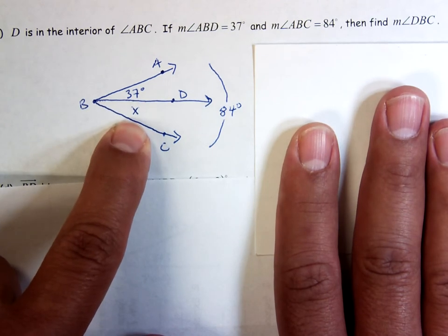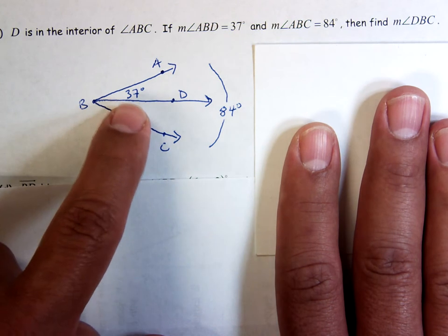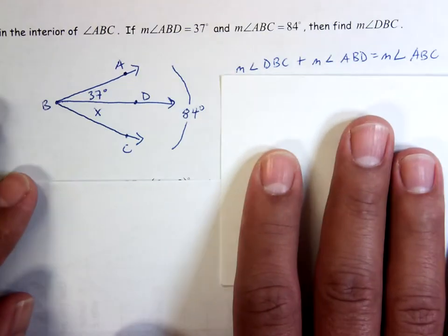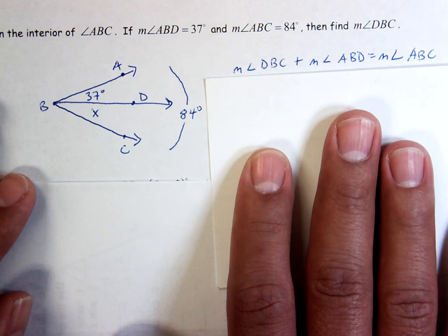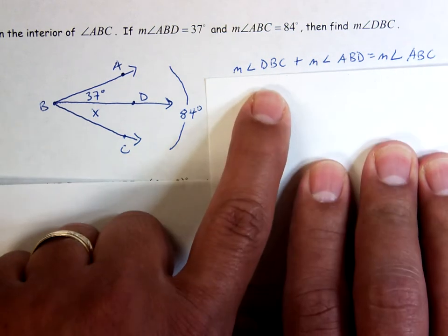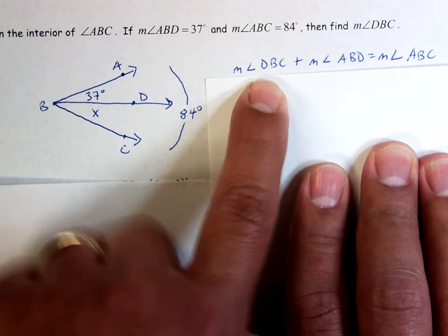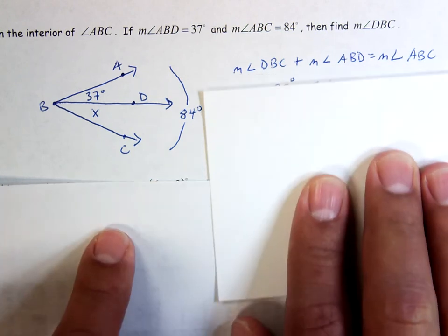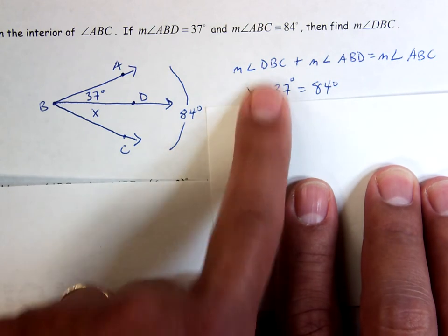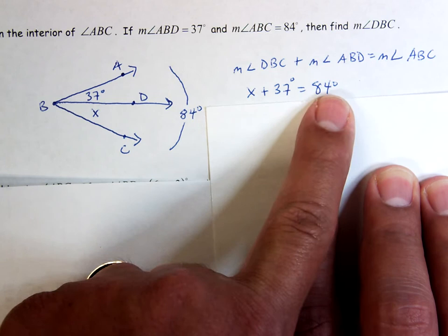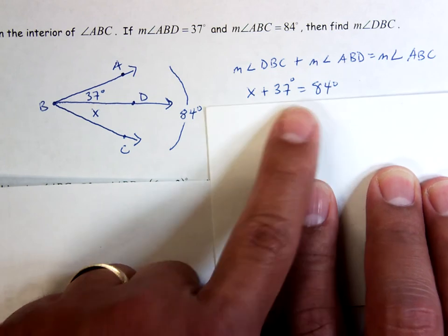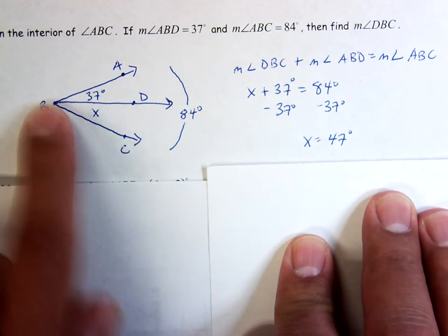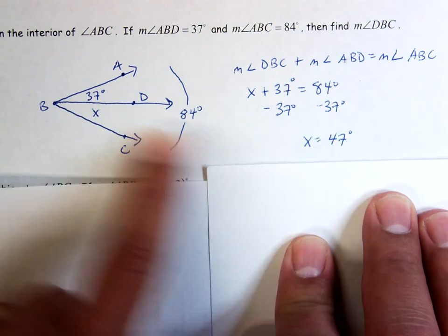Then find the measure of angle DBC, so they want this one. Now remember on that last page, according to the angle addition postulate, I should be able to add up this angle plus this angle and it should be equal to the big angle. So that's what I wrote over here. I'm going to put the measure of angle DBC, one of the smaller angles, plus the measure of angle ABD, the other smaller angle, must be equal to the measure of the big angle. Then I just plug in my numbers. So DBC is X, ABD is 37, and ABC is 84. So X plus 37 must be equal to 84 degrees. Subtract 37 from both sides, and I get that X is equal to 47 degrees. So the measure of angle DBC must be equal to 47 degrees, because these two had to add up to 84.